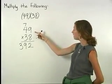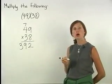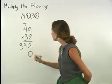Now we have 49 times 3. Remember to use a 0 to fill the unit's position.